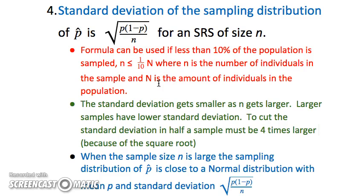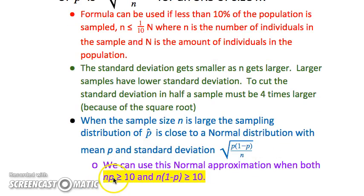We're going to look at what happens when we don't know the true proportion. As long as we sample less than 10% of the population when sampling without replacement, the probability holds for choosing an individual. Notice n is in our denominator, so as the sample size gets bigger, the standard deviation gets smaller, which is preferable for having less variability — a bigger sample size is better. To make sure that our shape is approximately normal, we need to multiply our sample size times the proportion to be greater than or equal to 10, and the sample size times 1 minus the proportion also greater than or equal to 10. This ensures we don't have too much skew. So if we have a really small or really large percentage, we can still achieve an approximately normal distribution.